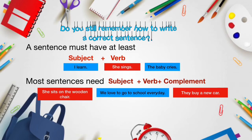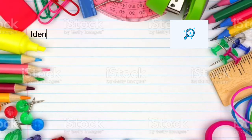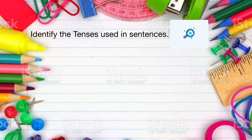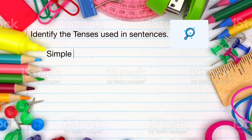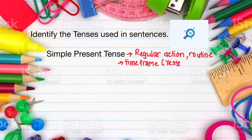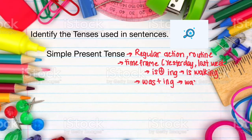In every sentence, try to identify the tenses used. Normally, there are four types of tenses used. First, simple present tense, which involves regular actions, routine activities, or facts about some things.